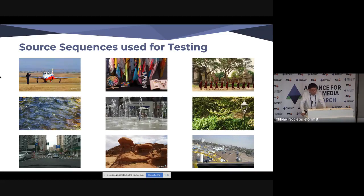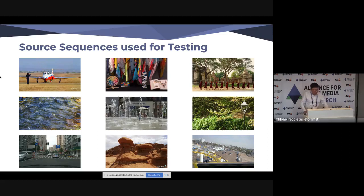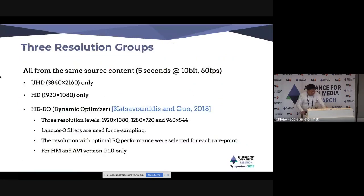To test their performance, we employed nine different source sequences: three with static scenes without camera motion but with local movement, three with dynamic textures like water and moving leaves, and three with camera motion. The original source sequences are all 5-second, 10-bit, 60 frames per second, 4K resolution. We downsampled these to lower resolutions as well.